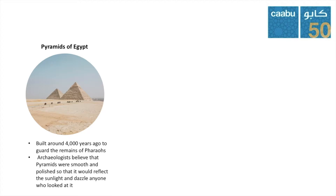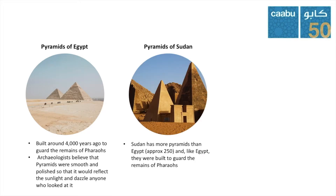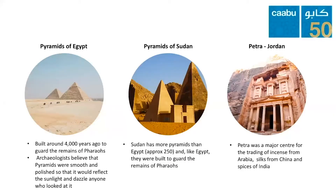Egypt is not the only country with pyramids. There are also the Nubian pyramids of Sudan. Interestingly, Sudan actually has more pyramids than Egypt — 250 — and like Egypt, they were built to guard the remains of the pharaohs. And last but not least, we have Petra in Jordan, which was a major centre for the trading of incense from Arabia, silks from China, and spices from India.